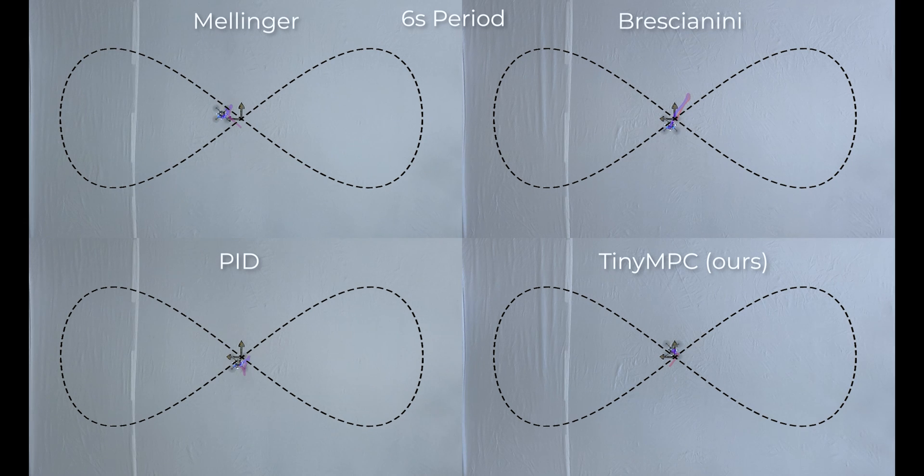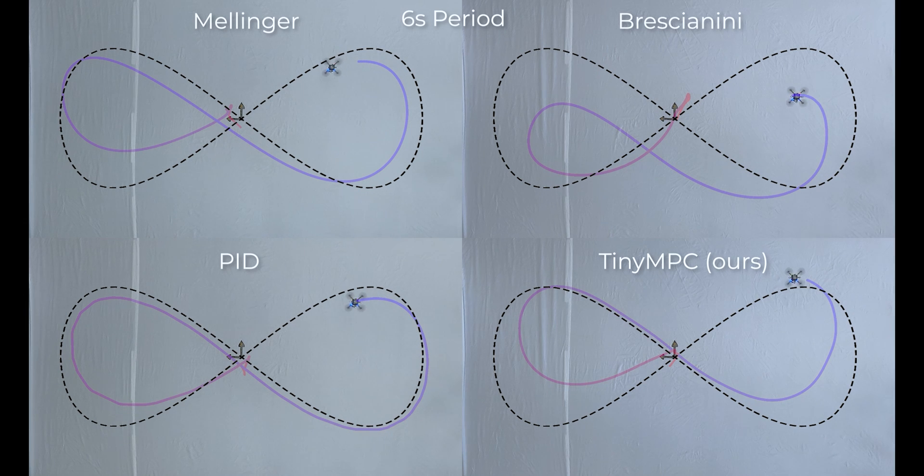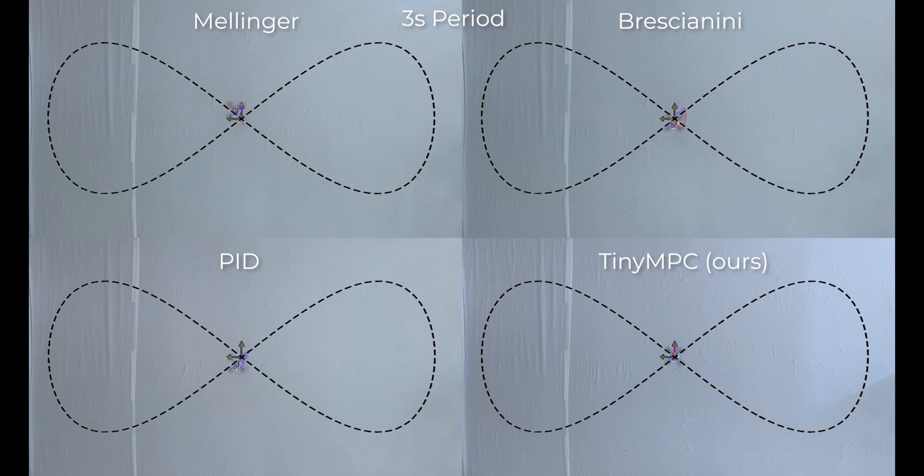We compared against three of the CrazyFly's built-in controllers by tracking a figure-8 trajectory at two different speeds. The first had a period of 6 seconds, and all four controllers had low tracking error. The second, larger figure-8, had a period of 3 seconds, and TinyMPC had the lowest tracking error.